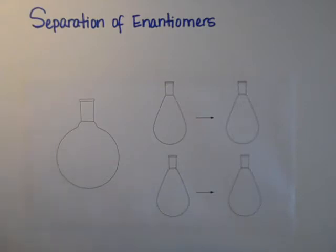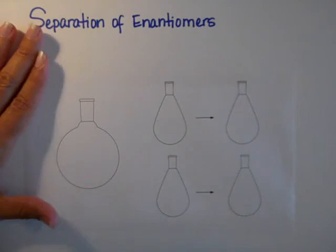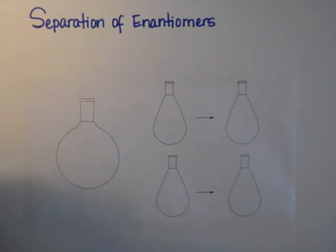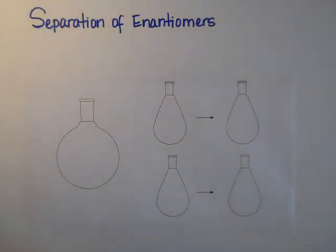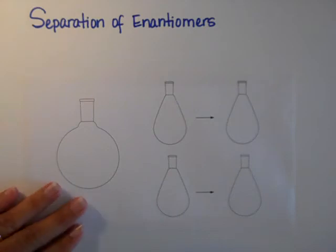We're talking about separation of enantiomers, and the problem with separating enantiomers is that they have the same physical properties and they do the same reactions. In terms of the physical properties, it's very difficult to separate enantiomers.